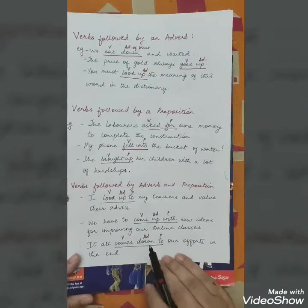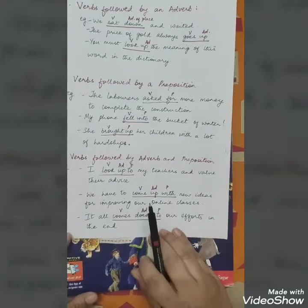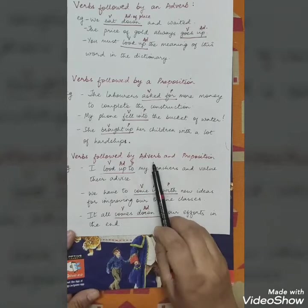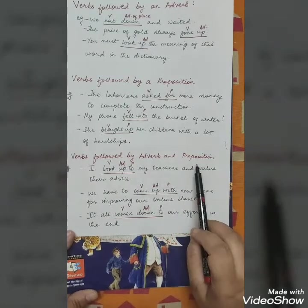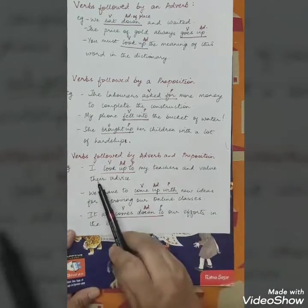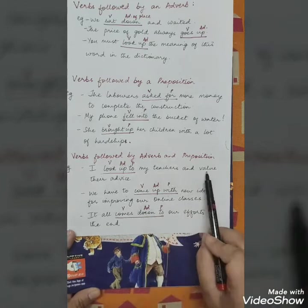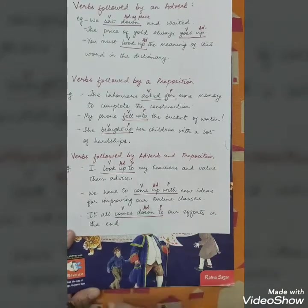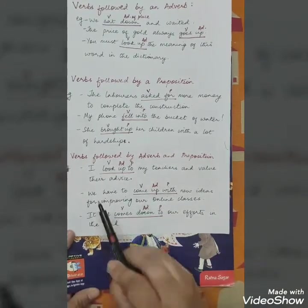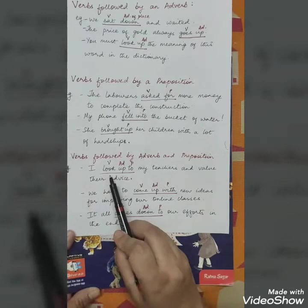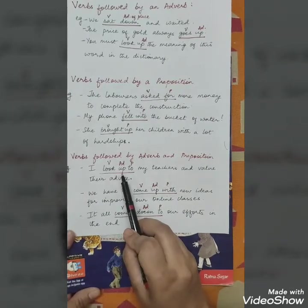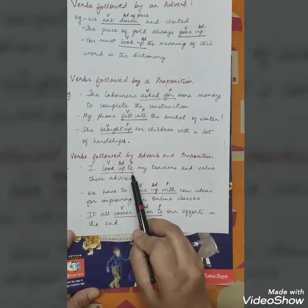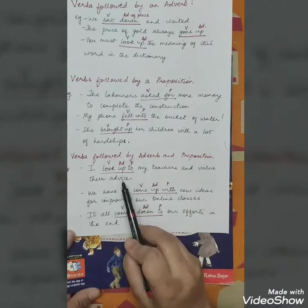Now let us see the third category: verbs followed by an adverb and a preposition. For example, 'I look up to my teachers and value their advice' — here the verb is followed by an adverb as well as a preposition, forming the phrasal verb 'look up to'.